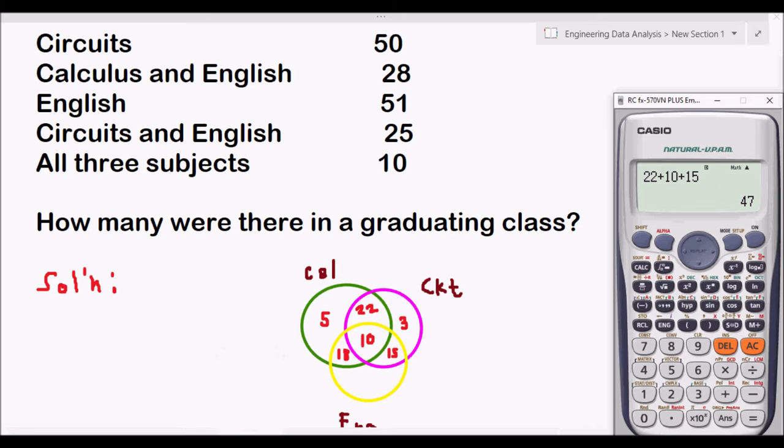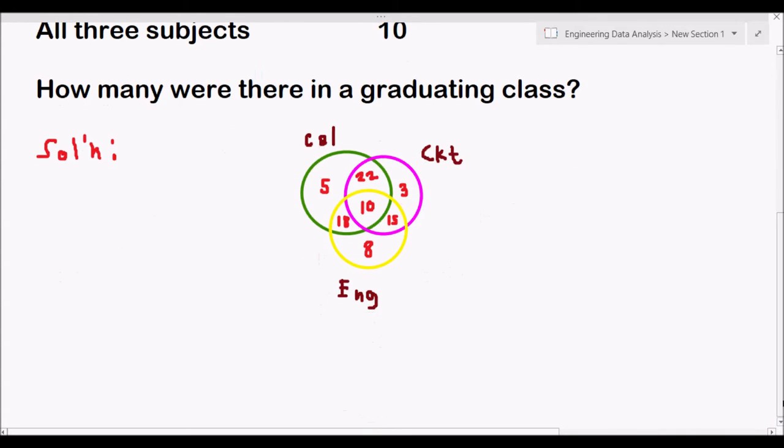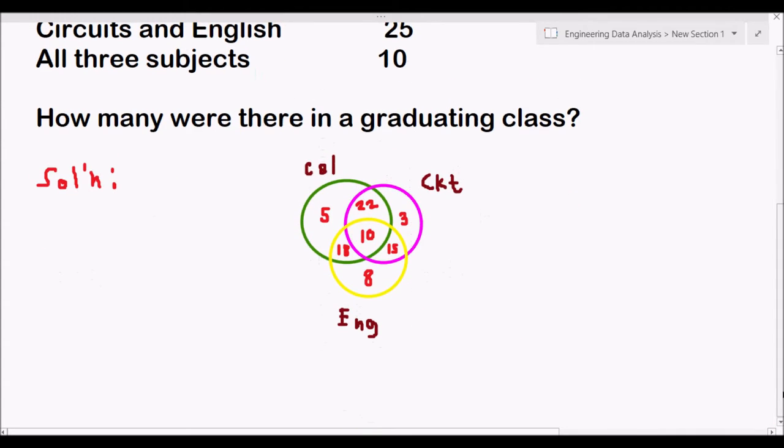We have English, English is 51. Then we have 18 plus 10 plus 15, so we have 43. 43 minus 51, that will be 8. You have now the complete representation of the survey, the equivalent Venn diagram.